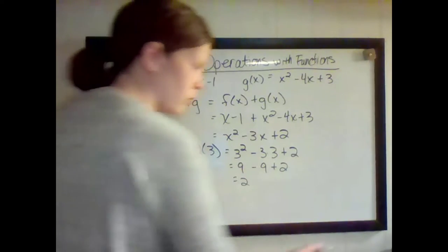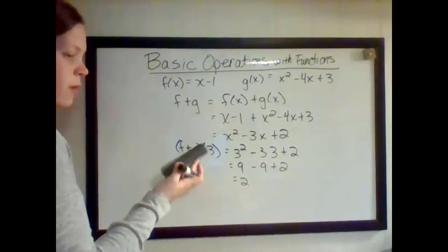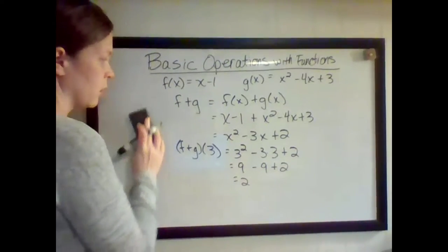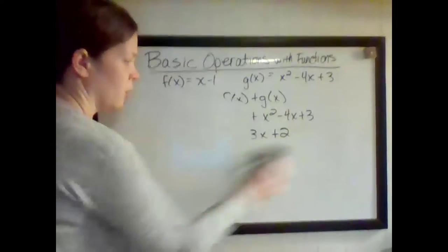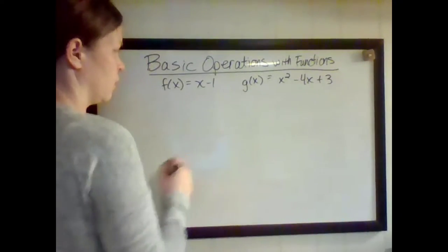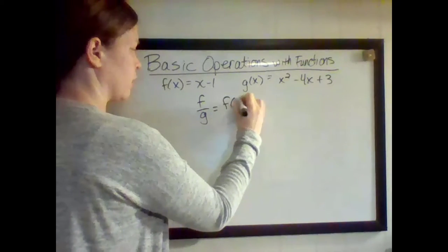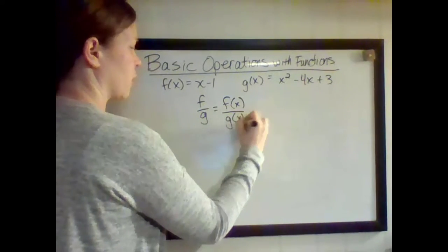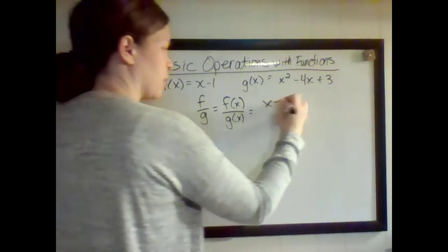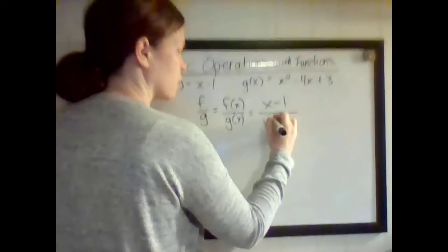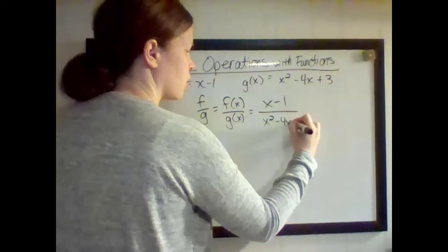Let's do one more. We're still going to use f(x) and g(x), but let's do division. So f(x) divided by g(x). I'm going to put x - 1 on top and x² - 4x + 3 on the bottom.